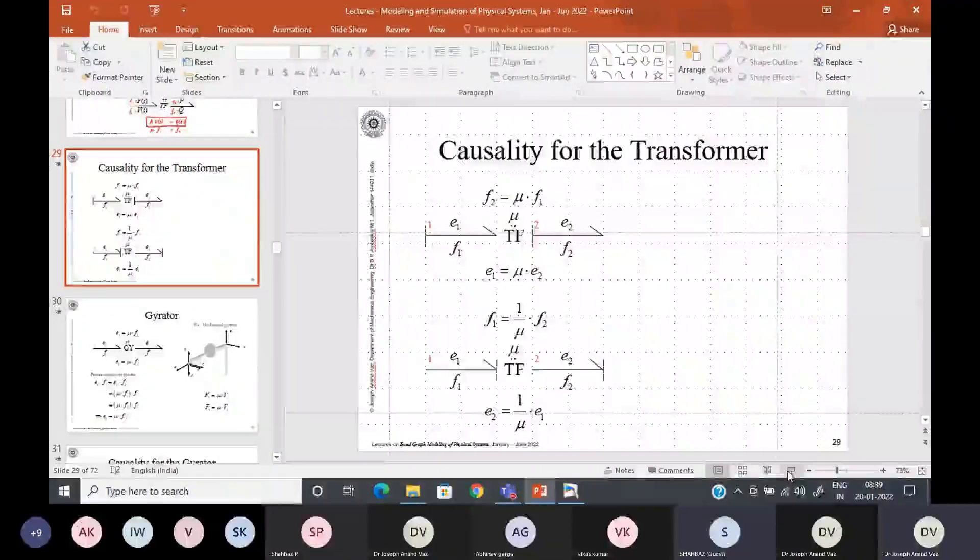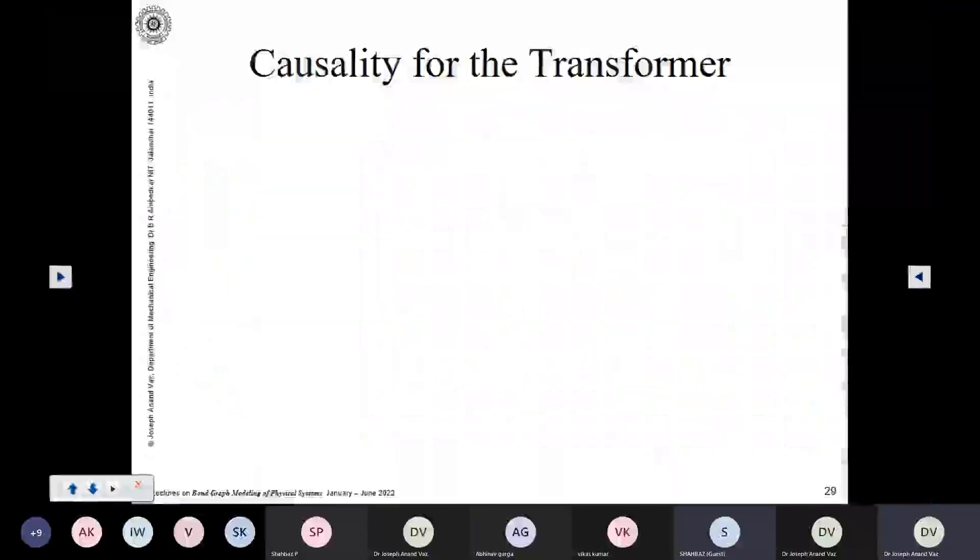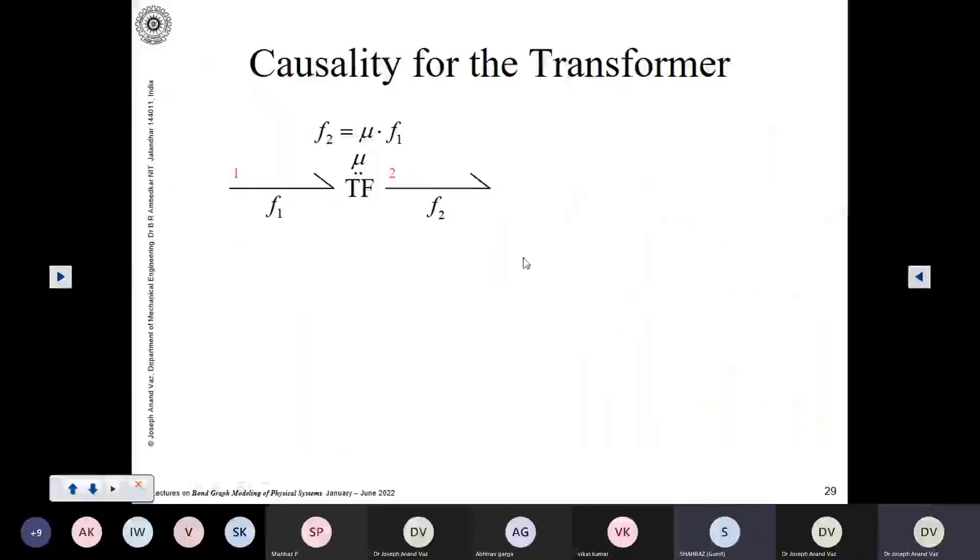We saw the causality of the transformer also in the last lecture. We saw that how the transformer relation is a flow-to-flow relation or an effort-to-effort relation. And we saw that if flow is input, flow is also output by the transformer. If effort is input, effort is also output by the transformer. So, the transformer is a flow-to-flow or effort-to-effort relationship. That is why the causality for the transformer appears like this.